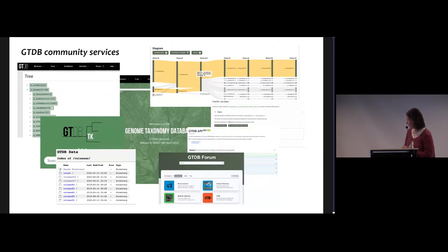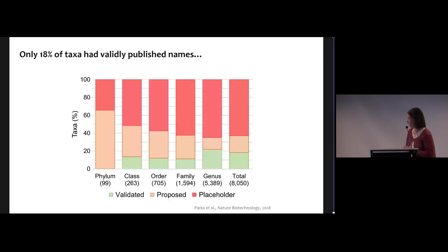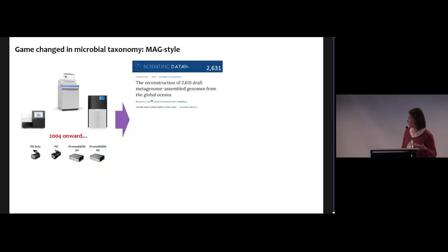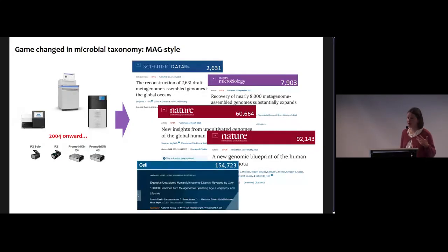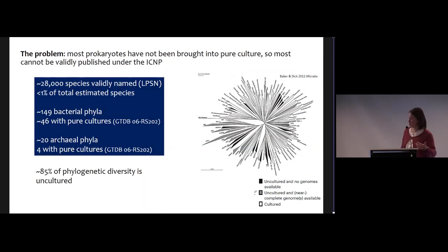When we first introduced GTDB taxonomy, we realized that only about 80% of the taxa have validly published names. This was due to technological advances in the field — we started recovering what we call metagenome-assembled genomes representing the uncultured majority, which couldn't be named under the official prokaryotic code. Effectively, approximately 85% of phylogenetic diversity is uncultured and unnamed.